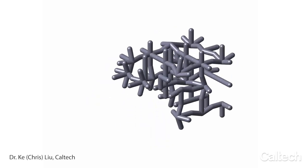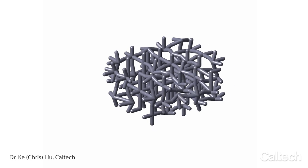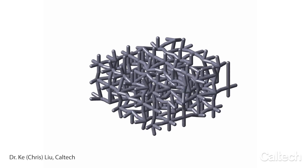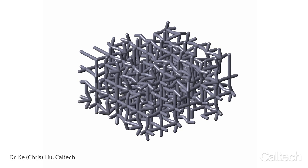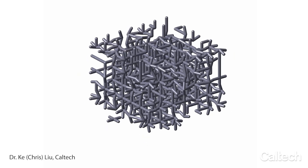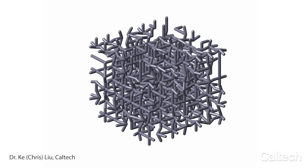Computers help us design the structures with optimization methods and data-driven technologies. Here, for example, I'm showing the simulation of Dr. Chris Liu at Caltech, who created an algorithm that allows a computer to grow a structured material following rules similar to those found in biological growth of living systems.